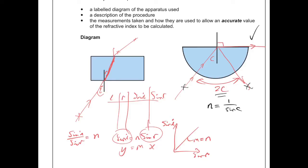Either method is acceptable. You can use the glass block, take multiple i and r values, plot a straight-line graph of sine i versus sine r, and take the gradient; or you can use the semicircular block method with the critical angle.